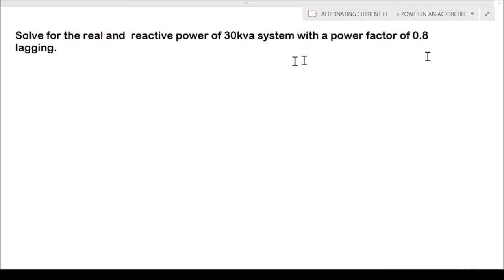Okay, so let's have the solution. Our given: the capacity of the system is 30 kVA, so that will be our apparent power. This is 30 kVA or 30,000 volt ampere, because kilo is equal to 1,000, so 30,000 volt ampere.